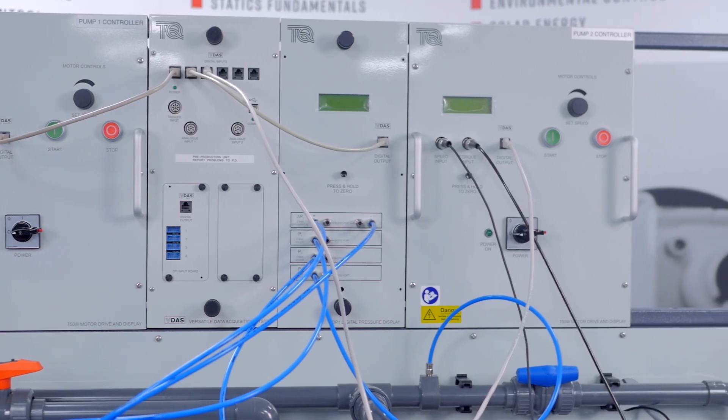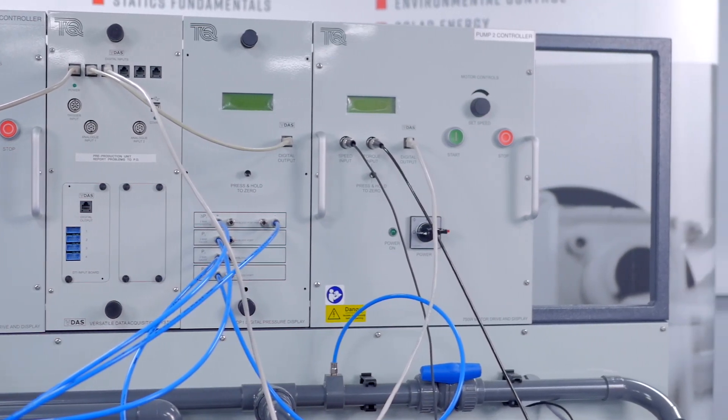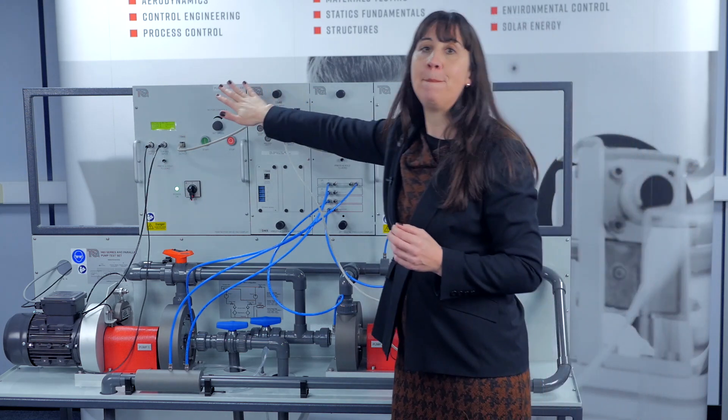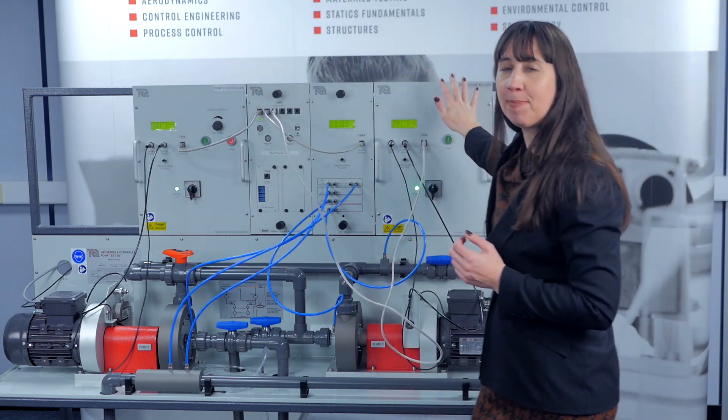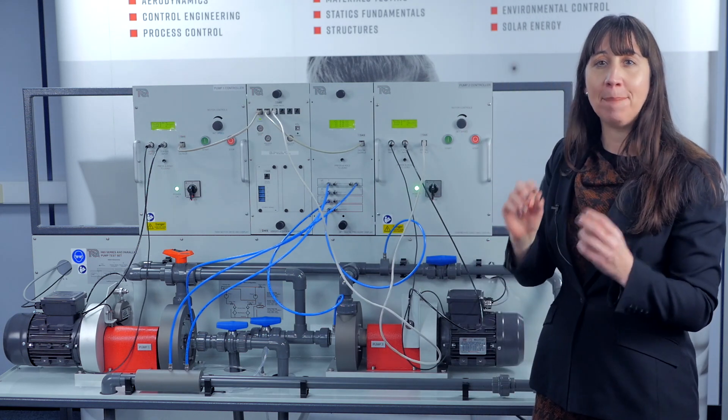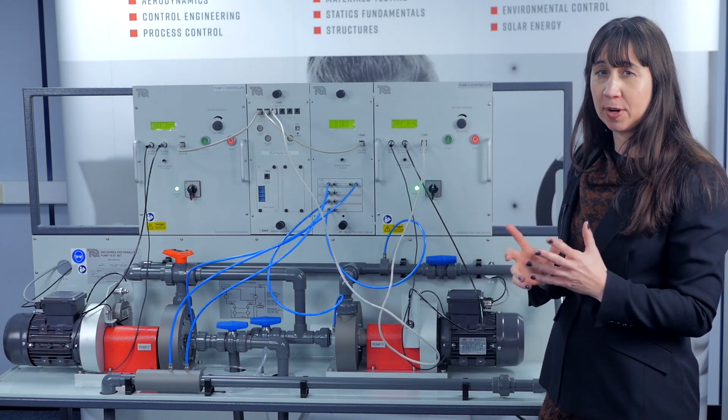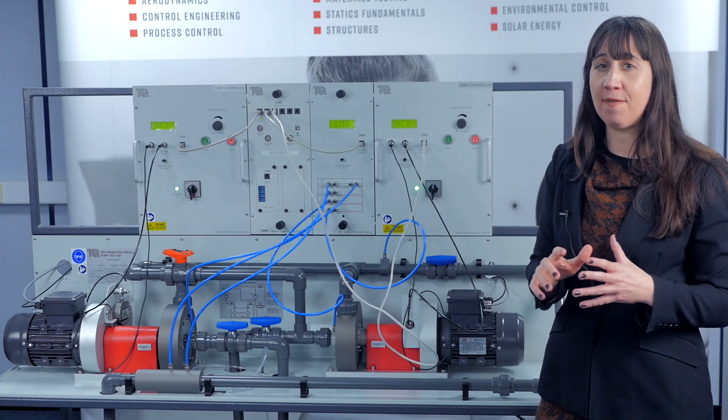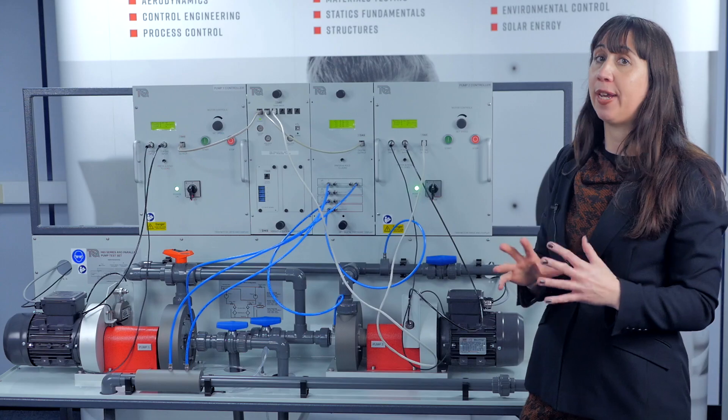Now let's look at the instrumentation and control modules that sit on the frame at the back here. Each pump has an electronic motor drive to control its speed, a load cell to measure torque, and a tachymeter to measure pump speed. For extra safety precautions, each pump motor has a thermal sensor to stop the drive in the unlikely event of the motor overheating.